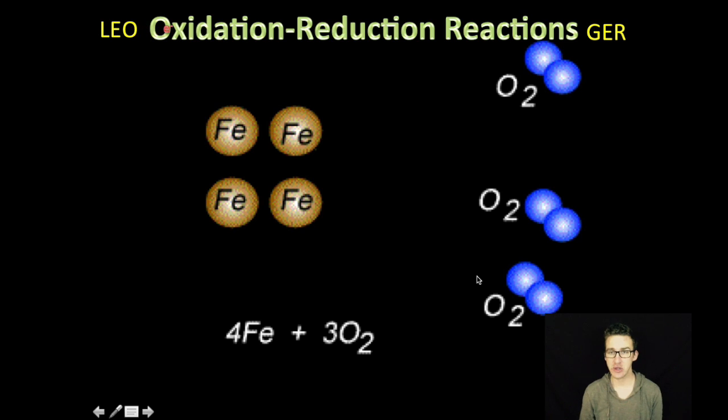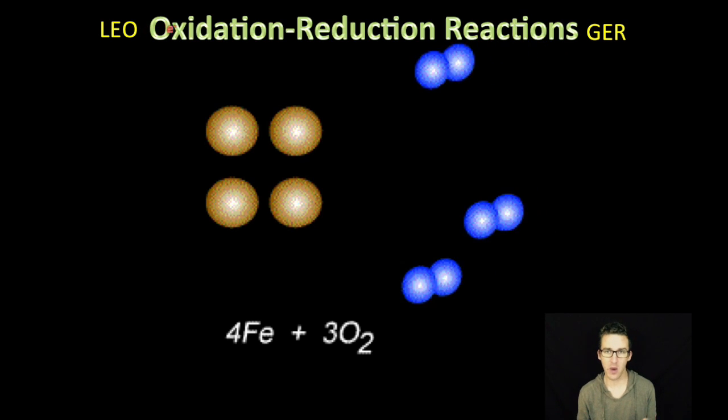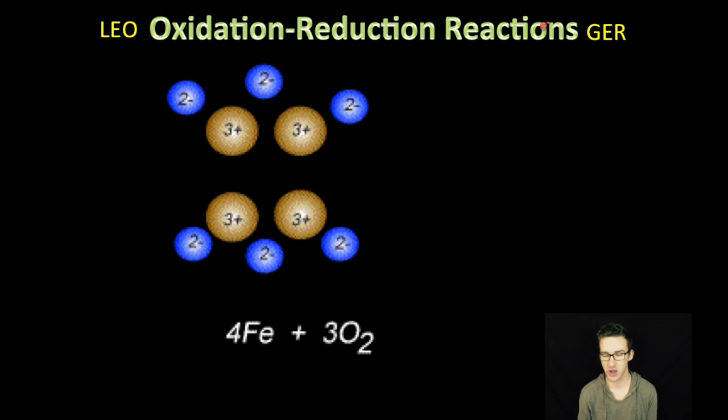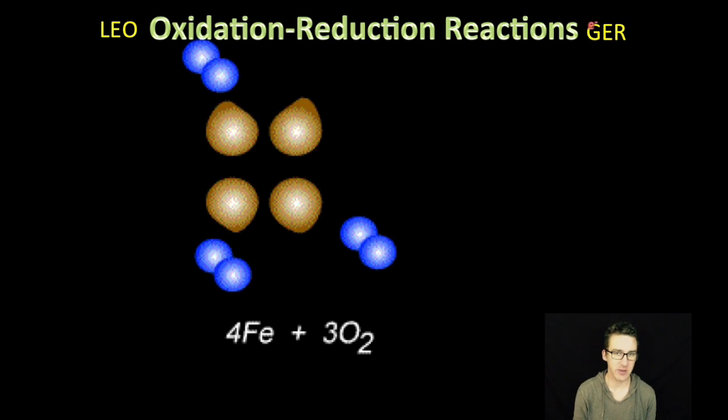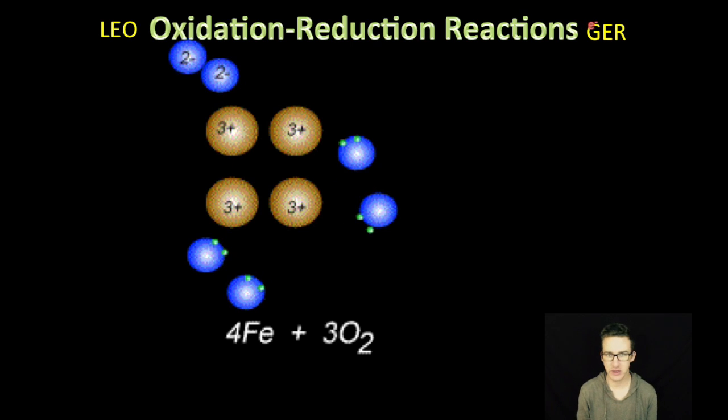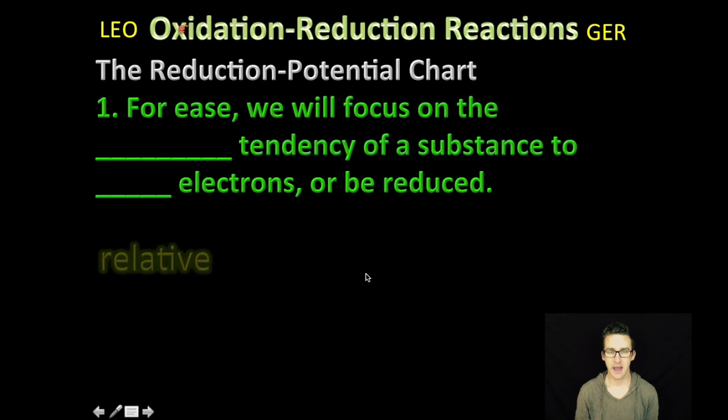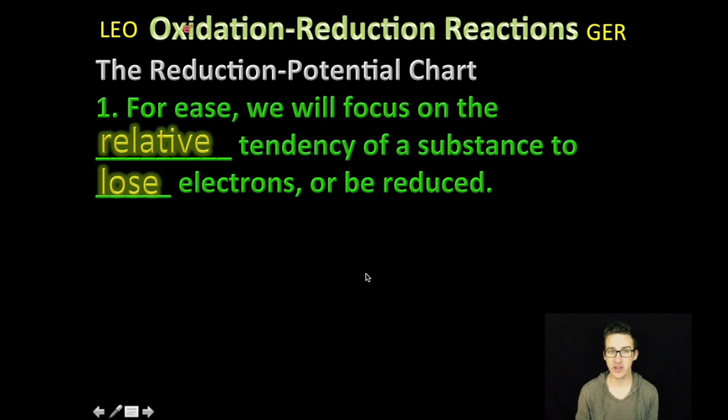As we come back to this thrilling reaction, and we think about why is oxygen gaining electrons and why is iron losing electrons? Or as you think about, is iron going to be more or less likely to lose electrons than other things? Or is oxygen going to be more or less likely to gain electrons than other things? Now, for ease, we are just going to focus on the relative tendency for a substance to lose electrons or be reduced.